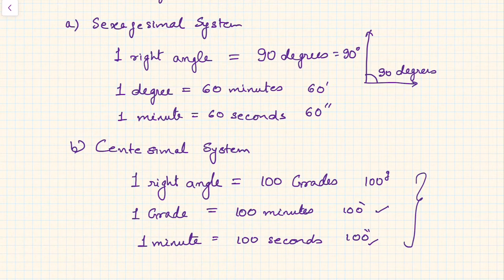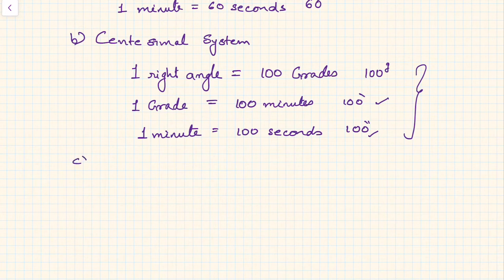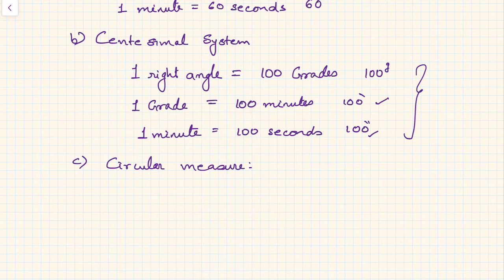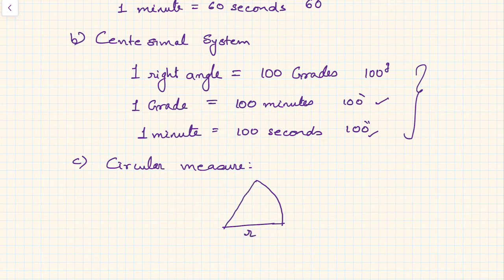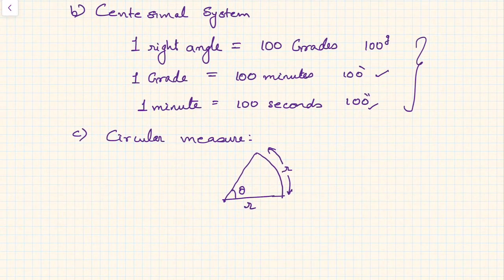The third system, found in almost all literature, is circular measure. Circular measure has its genesis in the ratio of the arc length and the radius of a circle. If we have an arc length and a radius r, and this angle is theta such that the arc length is also equal to r — the same as the radius — then theta is defined as one radian.